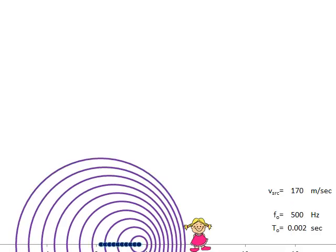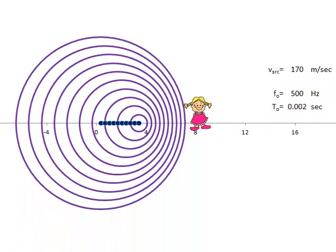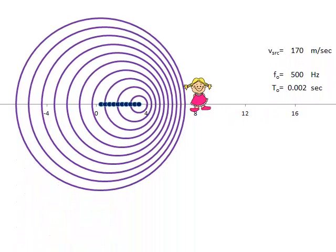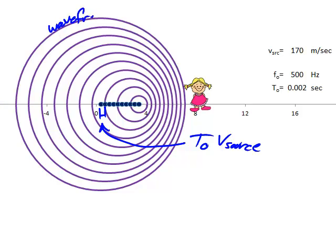Now let's consider the case with the observer stationary and the source of the sound moving to the right in the diagram. During the time from the creation of one compression to the next — that is, the period T-naught — the source moves to the right a distance v-source times T-naught, that is, speed times time. Each compression, spreading out in all directions at the speed of sound and forming an expanding circle, is called a wavefront.